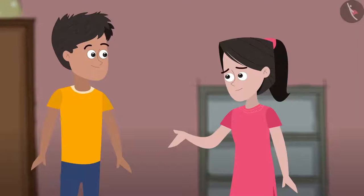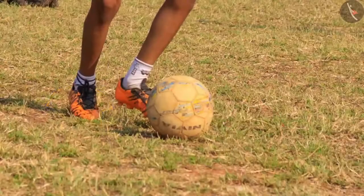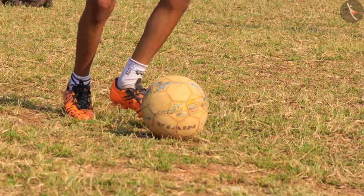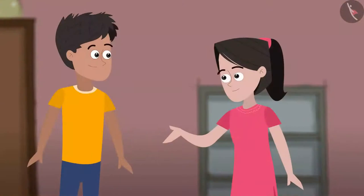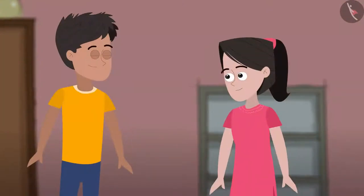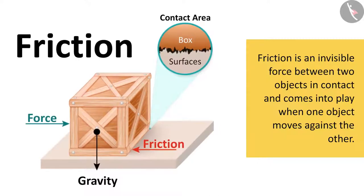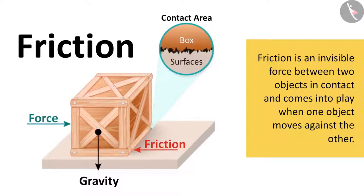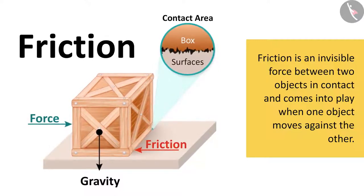Friction? I remember someone using this word earlier. Have you noticed, when a ball is kicked, the ball rolls to a distance and then stops? Well, that is because of friction. Friction is an invisible force between two objects in contact and comes into play when one object moves against the other. Friction tries to stop the rubbing motion.